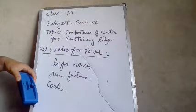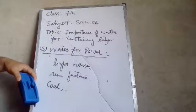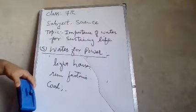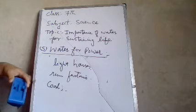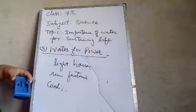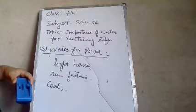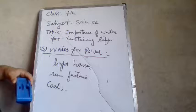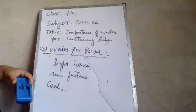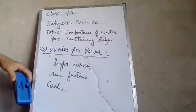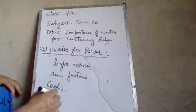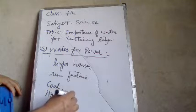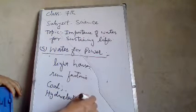The steam supplies the energy to run machines that produce electricity. Hydroelectric power stations use the energy of falling water from waterfalls and dams to turn water turbines that drive a generator to produce electricity.